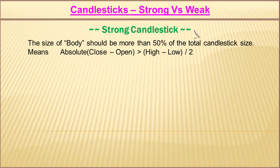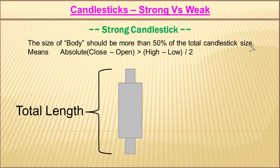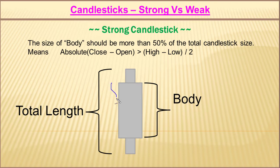First we will learn about strong candlesticks — what are strong candlesticks. A strong candlestick is one whose body is more than 50% of the total candlestick size. The total candlestick size is the difference between the high and the low, while the body size is the difference between the open and the close price. So the body must be more than 50% of the total candlestick size to be called a strong candlestick.